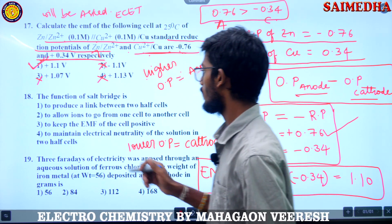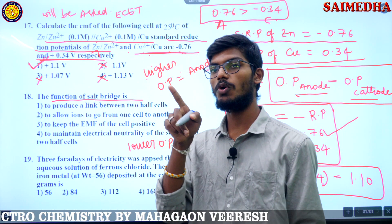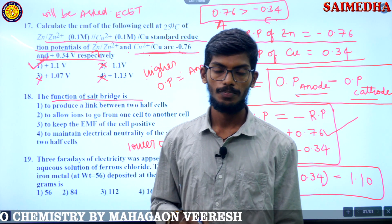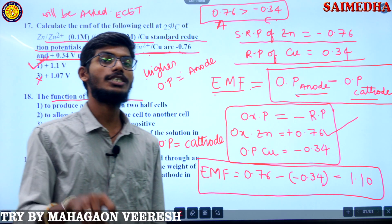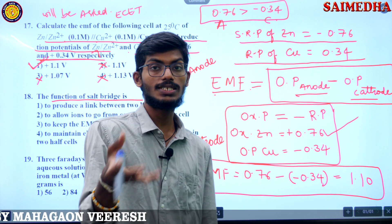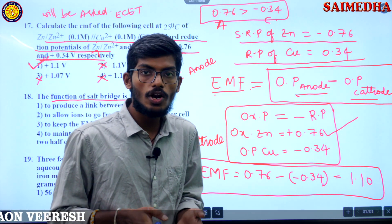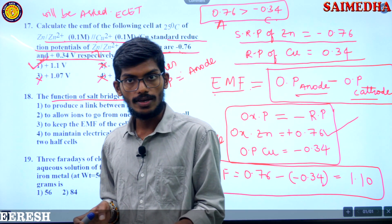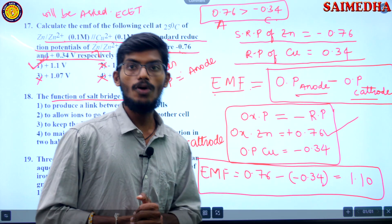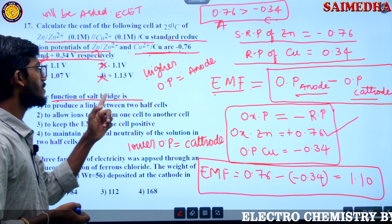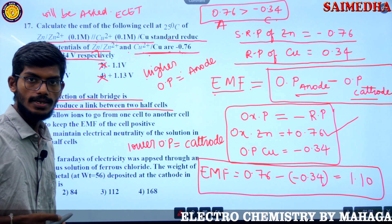Before the next question, he previously asked about why potassium chloride is used in the salt bridge — because the transport numbers of K+ ion and Cl- ion are similar. Now the current question asks: what is the function of the salt bridge? Option: to produce a link between two half cells — is this correct? No, it is wrong.